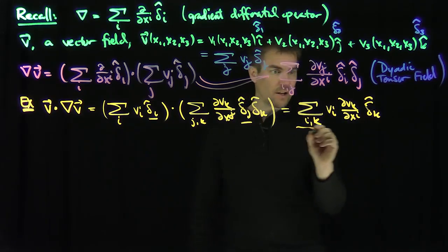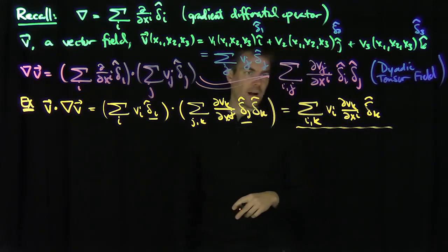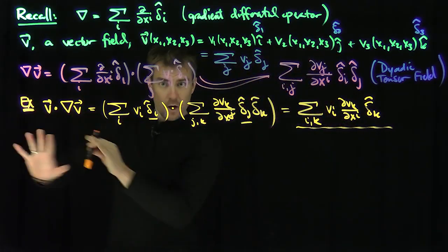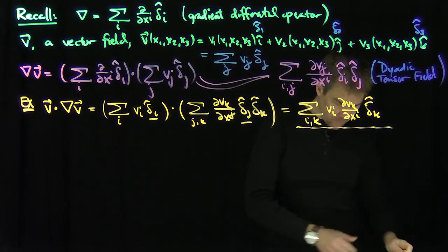These expressions as you're summing over i and k are the terms that appear when you're looking at the Navier-Stokes equations. This expression is a very important quantity to understand.